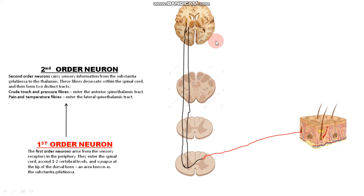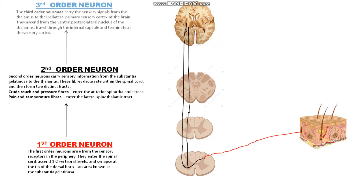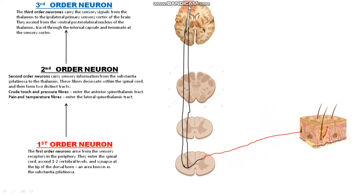The second order neuron synapses with the third order neuron at the thalamus of the brain. The third order neuron carries the signal from the second order neuron to the cerebral cortex of the brain. In this way, sensory signals from the skin travel all the way up to the cerebral cortex of the brain.